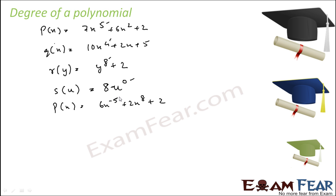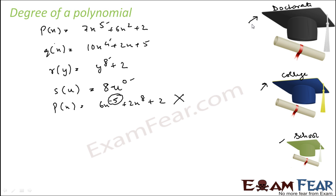Let's take one more — tell me what is the degree of this polynomial. Actually it is not even a polynomial, because for it to be a polynomial these powers have to be whole numbers. Minus 5 is not a whole number, so this is not a polynomial. To remember degree of polynomial, think of degrees in school, college, and masters or PhD. School degree has less importance, college degree higher, doctorate the highest — similarly here, the higher the power, the higher the degree.